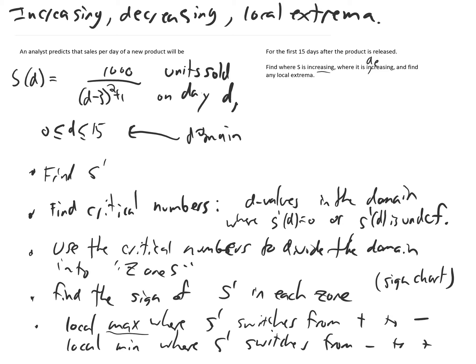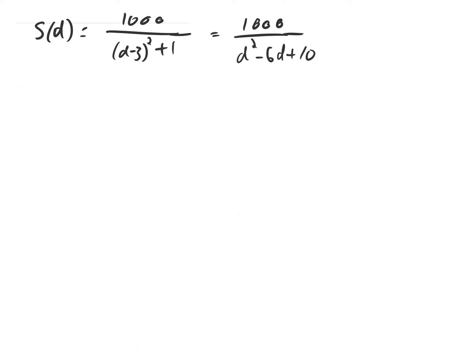We have a local max wherever the derivative S prime switches from positive to negative, that is switching from increasing to decreasing. It's going up the hill, then back down. And it's a local min where S prime switches from negative to positive, which is switching from decreasing to increasing. So we're going down the valley and back up. Alright, let's find that derivative.